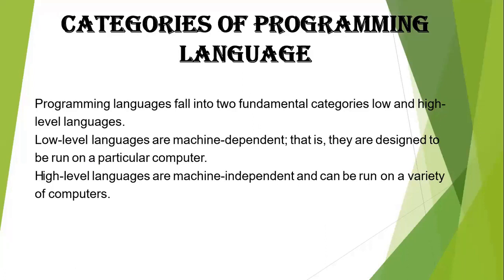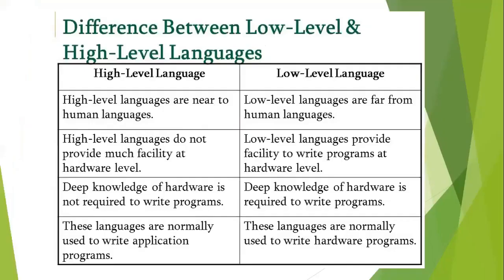Now we will see the difference between low level and high level languages. High level languages are near to human language — we can understand and write in them. Low level languages are far from human language and we can't understand them. Only the computer can understand low level language.